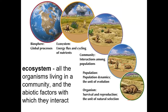A community would include all the termites, various plant species, prairie dogs, mice, and whatever else lives in that area. Another way to say that is the biotic factors in the environment — 'bio' means life, so it refers to all the living things in that area.